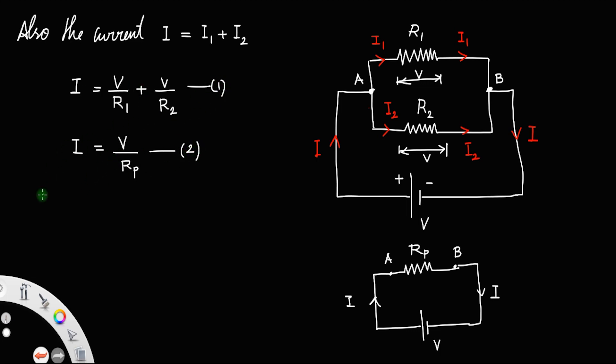From equation 1 and 2, you know that they both are equal, both represent the value of current. So V by Rp is equal to V divided by R1 plus V divided by R2. That is, V divided by Rp equals V into 1 by R1 plus 1 by R2.